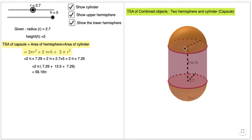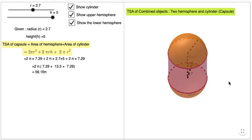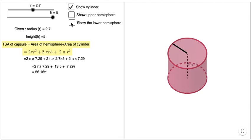This is how to find the surface area of a capsule, which is two hemispheres and a cylinder. Play around with this model and understand.